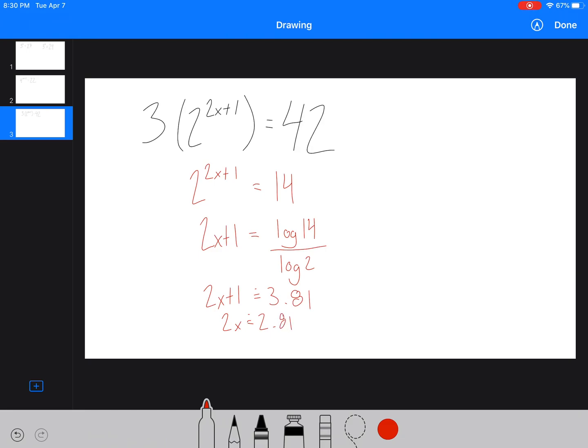And then we're going to, 2x equals 2.81, and I'm keeping all of the decimals in my calculator, but I'm just writing down to two decimals here. And then we get x equals 1.40.